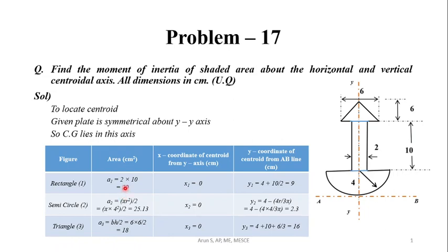For the rectangle, the base is 2 and depth is 10, so the area A1 = 20 cm². The centroid is symmetric about the y-axis, so the x-coordinate is 0. The y-coordinate y1 = 4 + 10/2 = 9 cm from the base.